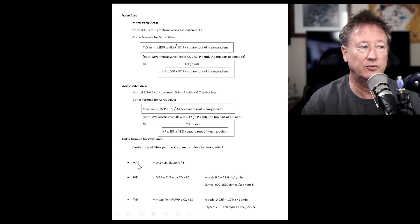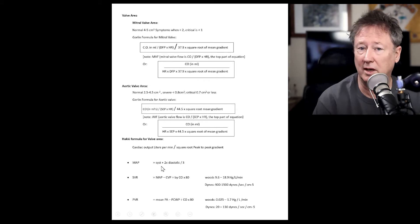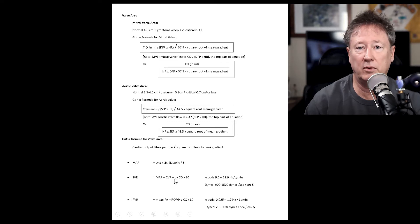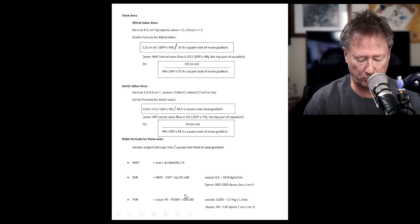Calculations for mean arterial pressure, the systolic pressure plus two times the diastolic pressure divided by three. SVR, whether you want it in woods or dynes. You always calculate your number and that's your woods. And if you multiply it by 80, that's what you get in dynes. And the same way for the pulmonary vascular resistance, the formula here, as well as normals.